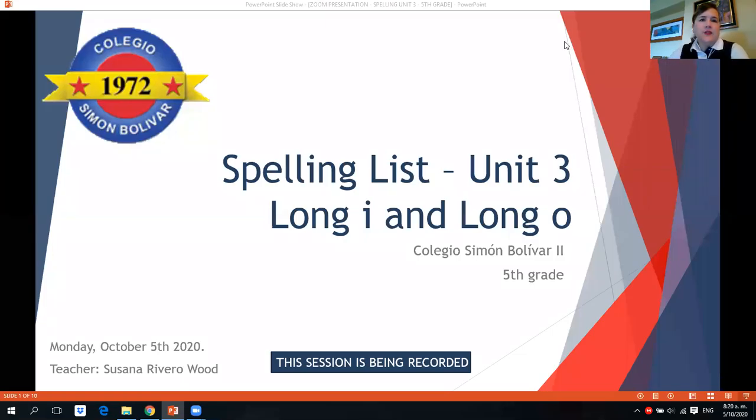Good morning, guys. Today we're going to study spelling list number three. Spelling list number three covers words with long I and long O sound. Long I sound is when the letter inside the word sounds like I, and long O means sound like O inside the word.